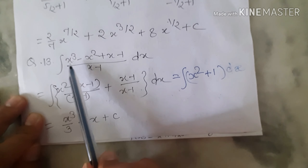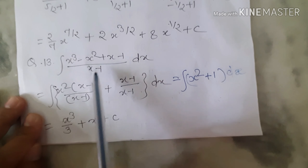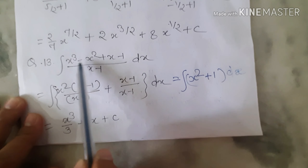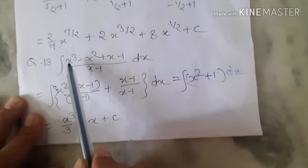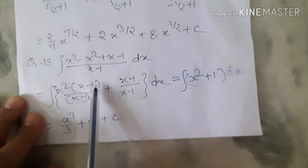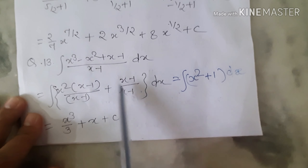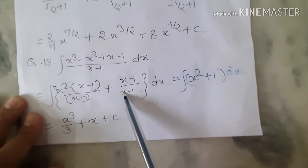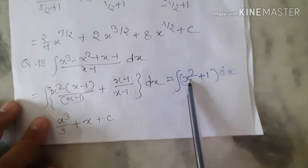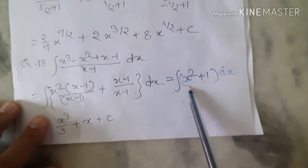Question 13 is a little tricky. Integral of (x³ - x² + x - 1)/(x-1) dx. Take x² common from the first two terms: x²(x-1) + (x-1) all over (x-1). Separate into x²(x-1)/(x-1) + (x-1)/(x-1). The (x-1) cancels in both terms, leaving integral of (x² + 1) dx = x³/3 + x + c.